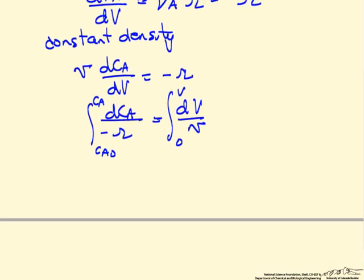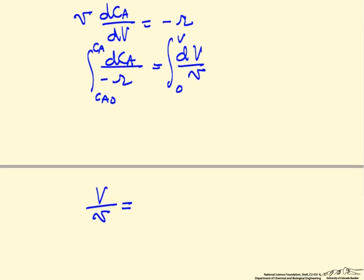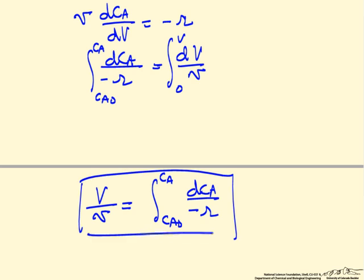From this integration, we end up with volume over the volumetric flow rate equals the integral from CA0 to CA of dCA over minus R, and this is a plug flow reactor mass balance.